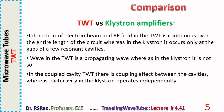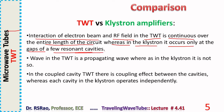Comparing TWT amplifiers with Klystron amplifiers: both are microwave amplifiers and microwave tubes. In TWTs, the interaction of the electron beam and RF field is continuous over the entire length of the circuit, whereas in the Klystron it occurs only at the gaps of a few resonant cavities.